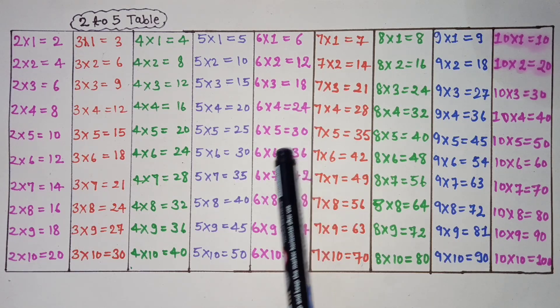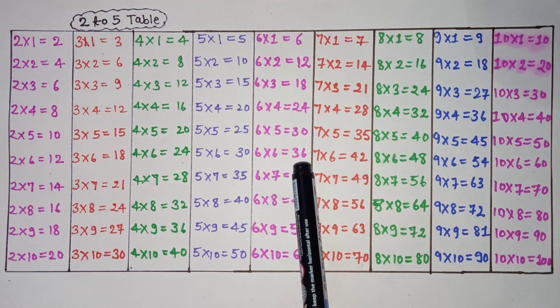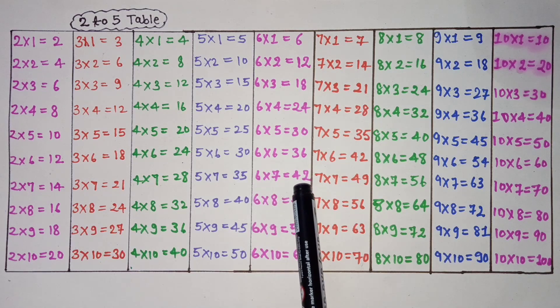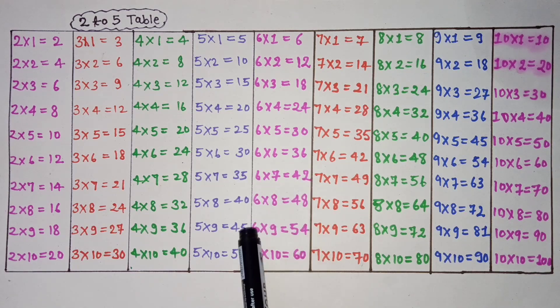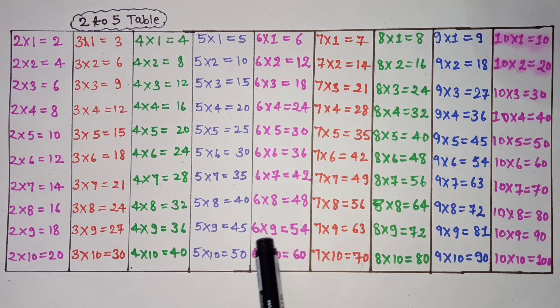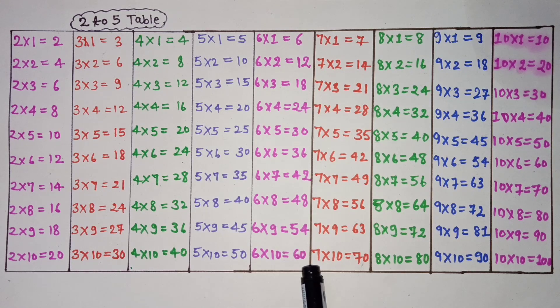6 6 is 36, 6 7 is 42, 6 8 is 48, 6 9 is 54, 6 10 is 60.